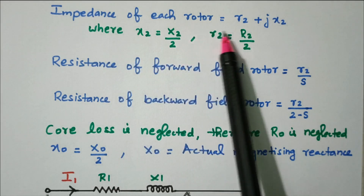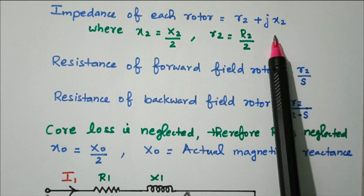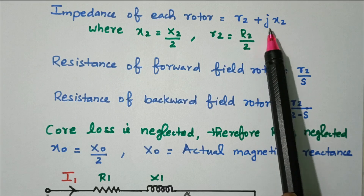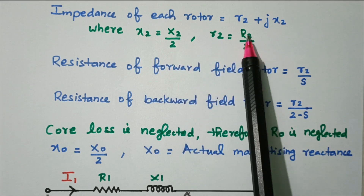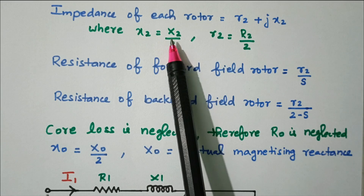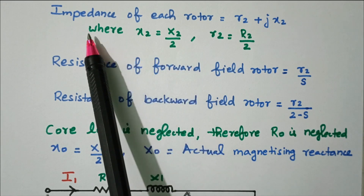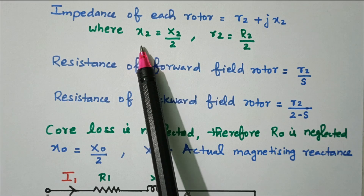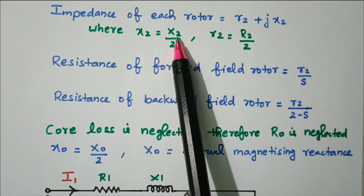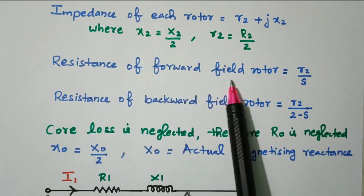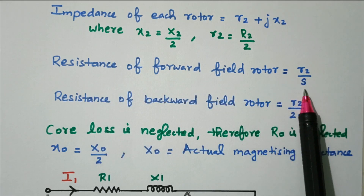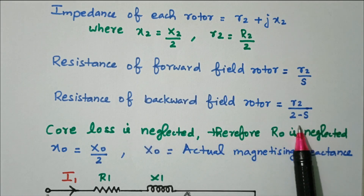The impedance of each rotor equals r2 plus jx2, where small r2 is R2 divided by 2 and small x2 is X2 divided by 2. The resistance of the forward field rotor is r2/s, and the backward field rotor resistance is r2/(2 minus s), since forward direction uses slip s and reverse direction uses slip 2 minus s.